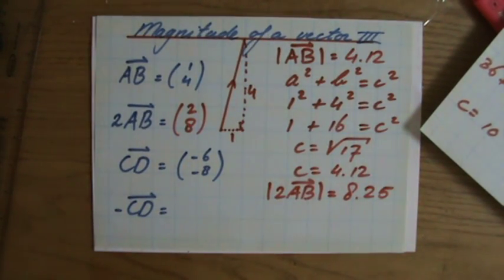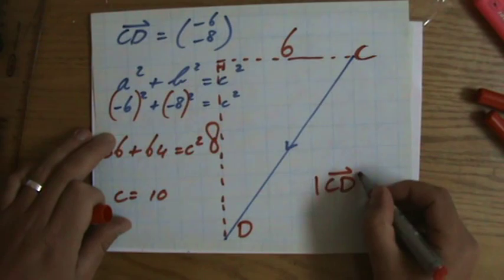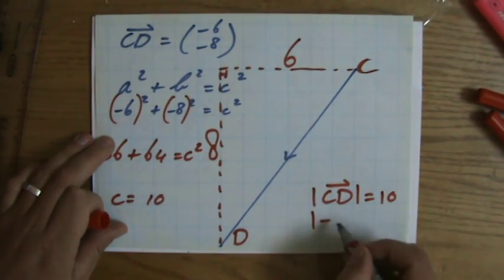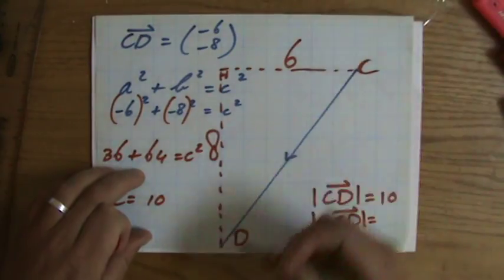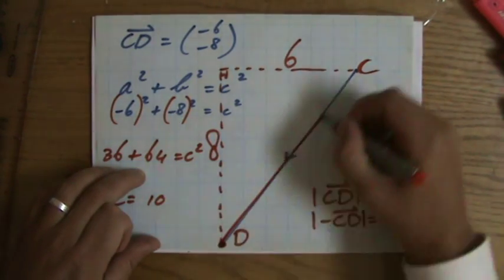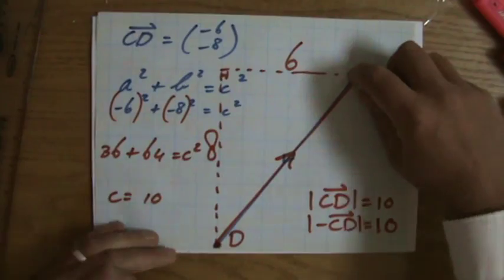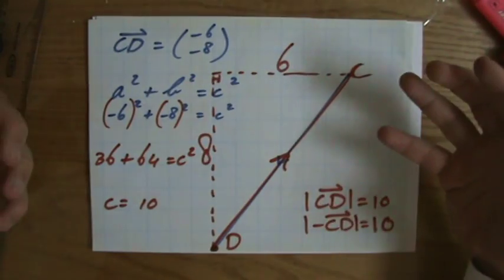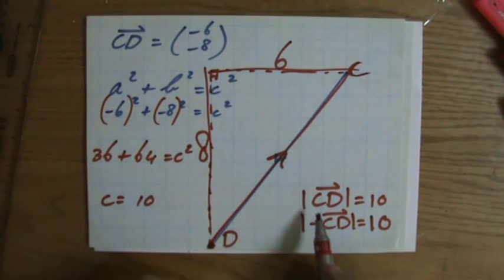Then the question is, what is minus CD? So the magnitude of CD is 10. What is the magnitude of minus CD? What do you think? Did you say minus 10? No, of course it's not minus 10. What is the length of this line? It's 10. From C to D, it's 10. If I change the direction, so minus CD, which means from D to C, what happened to the length? Absolutely nothing. It is still 10. Yes, the direction changed. Vectors have a direction and a magnitude, yes, but the magnitude did not change. Because this is still 6 and that is still 8. So the magnitude of CD equals the magnitude of minus CD.